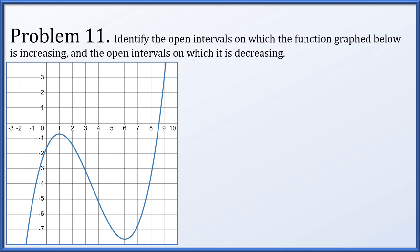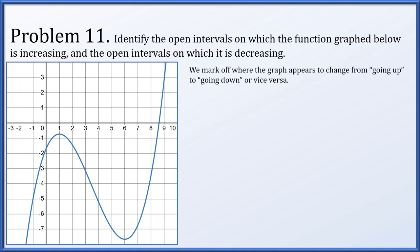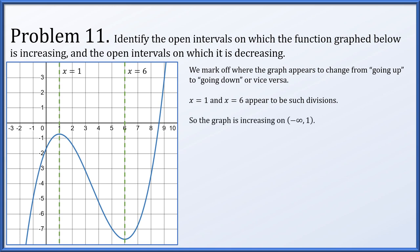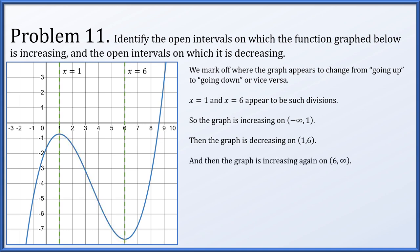For problem 11, identify open intervals on which the function is increasing and decreasing from the graph. The graph appears to change direction at x = 1 and x = 6. From (-∞, 1) the graph goes up — increasing. From (1, 6) the graph goes down — decreasing. From (6, ∞) the graph goes up again — increasing.